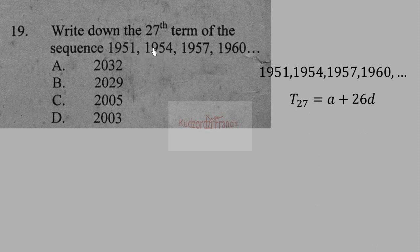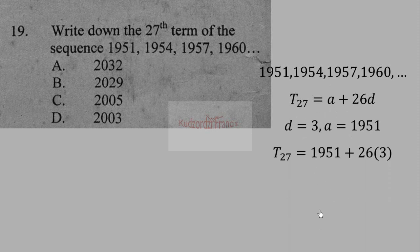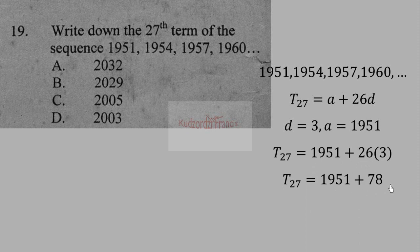The first term is 1951 and the common difference d = 3. So the 27th term = 1951 + 26 × 3 = 1951 + 78 = 2029.